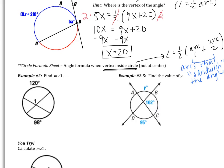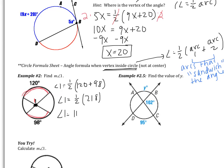In example 2, we see the vertex is inside the circle — right here — but not necessarily at the center. If the vertex were at the center, the angle would just equal the arc; that's a central angle. So angle 1 is going to equal one half the two arcs that sandwich it. This arc is like one piece of bread, this arc is the other. So it's one half of 120 plus 98. The measure of angle 1 is one half of 218, which gives me 109 degrees.